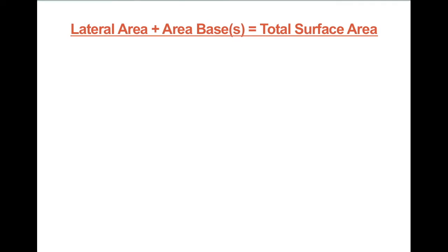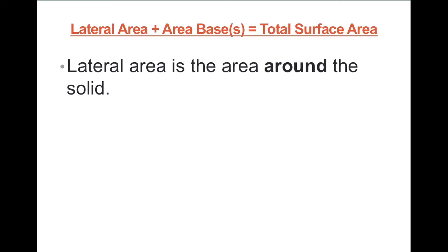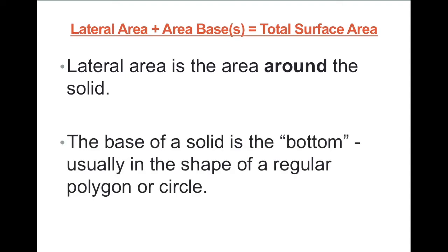The lateral area plus the area of the bases equals the total surface area. The lateral area is the area around the solid. And the base of the solid is the bottom, usually in the shape of a regular polygon or a circle.